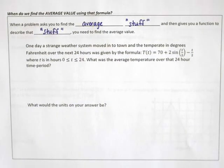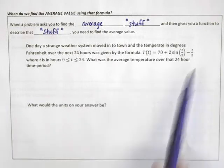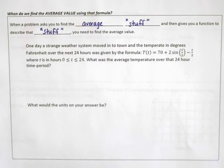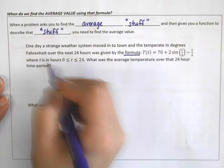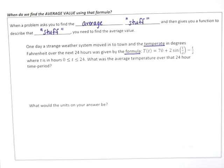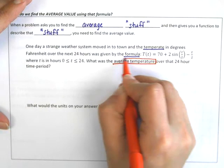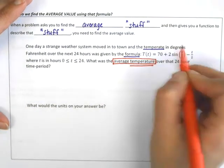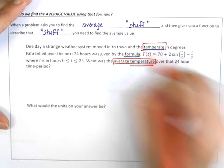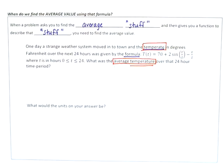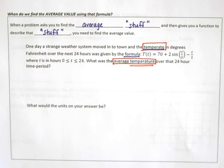If I read this problem: 'One day a strange weather system moved into town, and the temperature in degrees Fahrenheit over the next 24 hours was given by the formula shown here, where that is the temperature.' The next sentence asks: 'What is the average temperature?' If they give you a formula for the temperature and say find the average temperature, that means we want to find the average value.